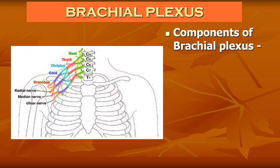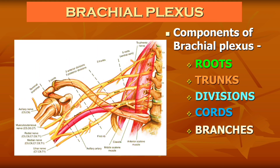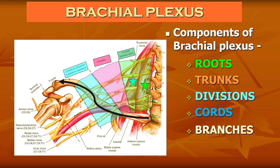The brachial plexus consists of roots, trunks, divisions, cords, and branches. The roots are situated in the neck region between the scalenus anterior and scalenus medius muscles. Trunks are situated in the posterior triangle of the neck, and divisions are situated behind the clavicle, while the cords and the terminal branches are situated below the clavicle in the axilla.